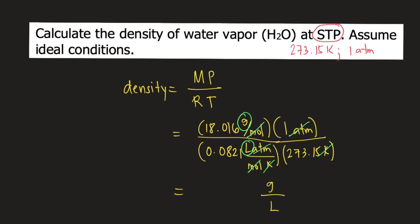If you solve this in your calculator, 18.016 times 1 divided by 0.0821 times 273.15, this is approximately equal to 0.80 grams per liter. And this is the answer to the question.